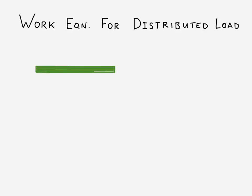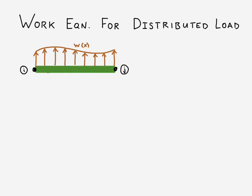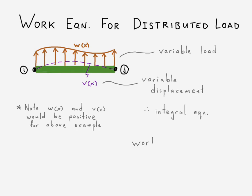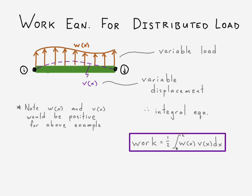Here's the original beam with a generic, arbitrary distributed load applied over the top, and this is what our displacement could look like — drawn in the default positive directions going up. There's our variable load and our variable displacement. Previously we just had a scalar or discrete equation, but here, since we have variable load and variable displacement, we actually need an integral to determine the work across the whole beam.